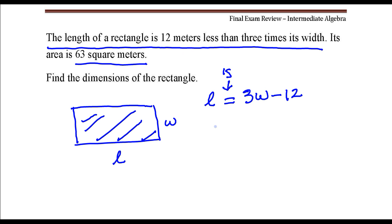Okay, and we also know that the area of a rectangle is length times width, and in this case the area is 63 square meters, so I'm just going to replace A with 63, and I'm going to replace this L with 3W minus 12.